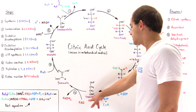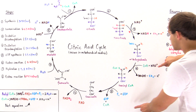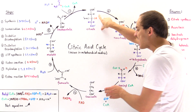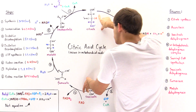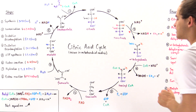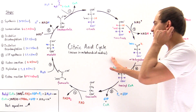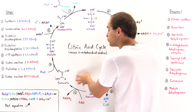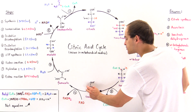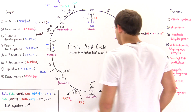Once we form the succinate, notice that we lost two carbon dioxide molecules, going from a six-carbon molecule to a four-carbon molecule. In steps six, seven, and eight, the entire goal is to transform this four-carbon succinate into a four-carbon oxaloacetate so that the citric acid cycle can begin all over again. Step six is an oxidation-reduction reaction, step seven is a hydration reaction, and step eight is another oxidation-reduction reaction. Ultimately, we transform this methylene group into a carbonyl group across these three steps.